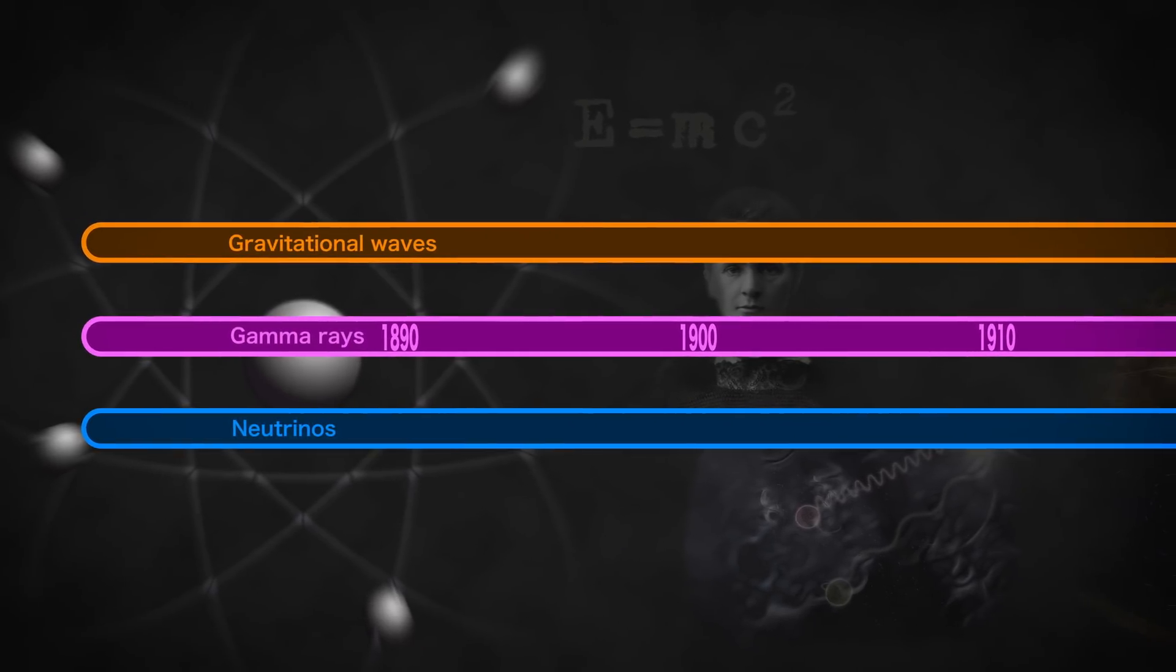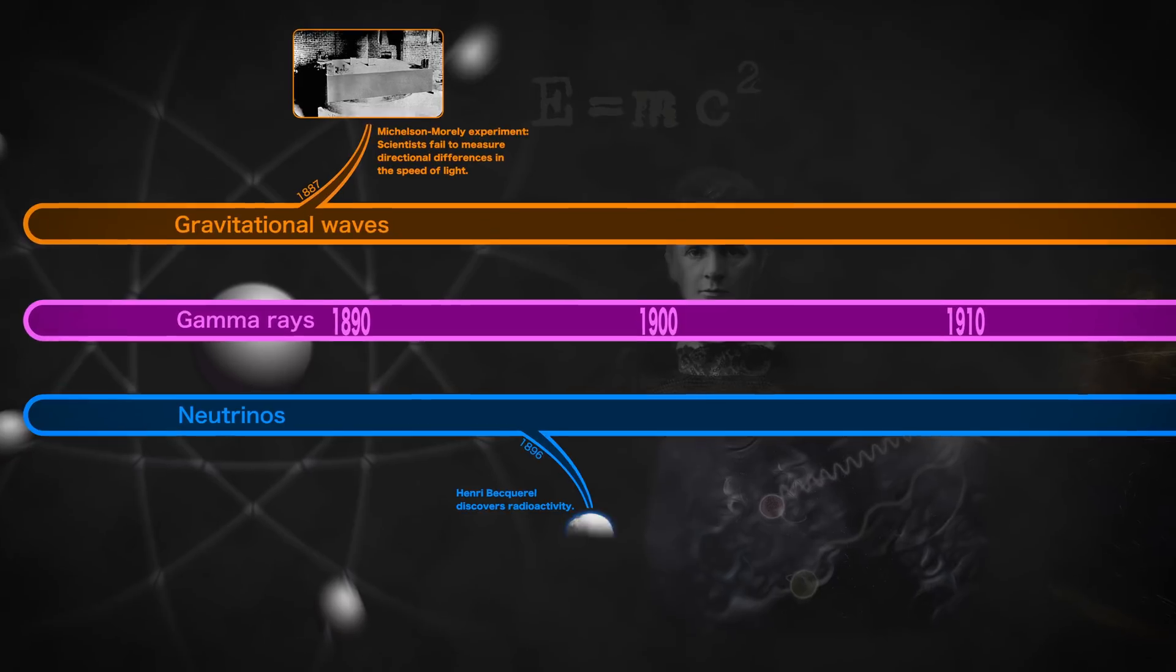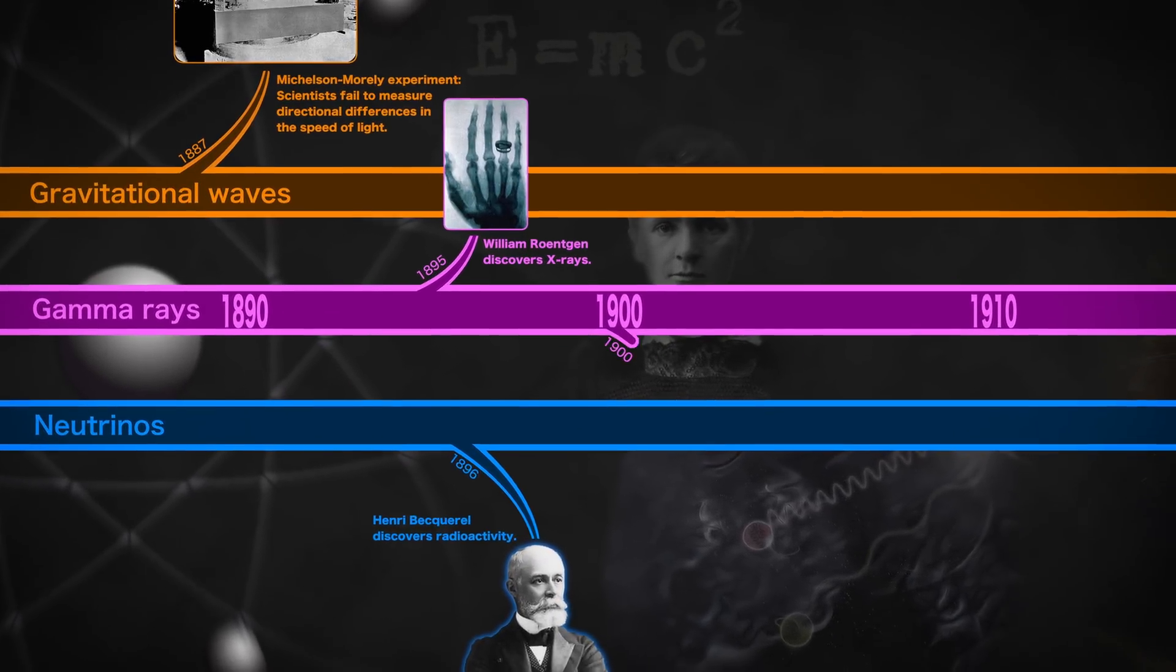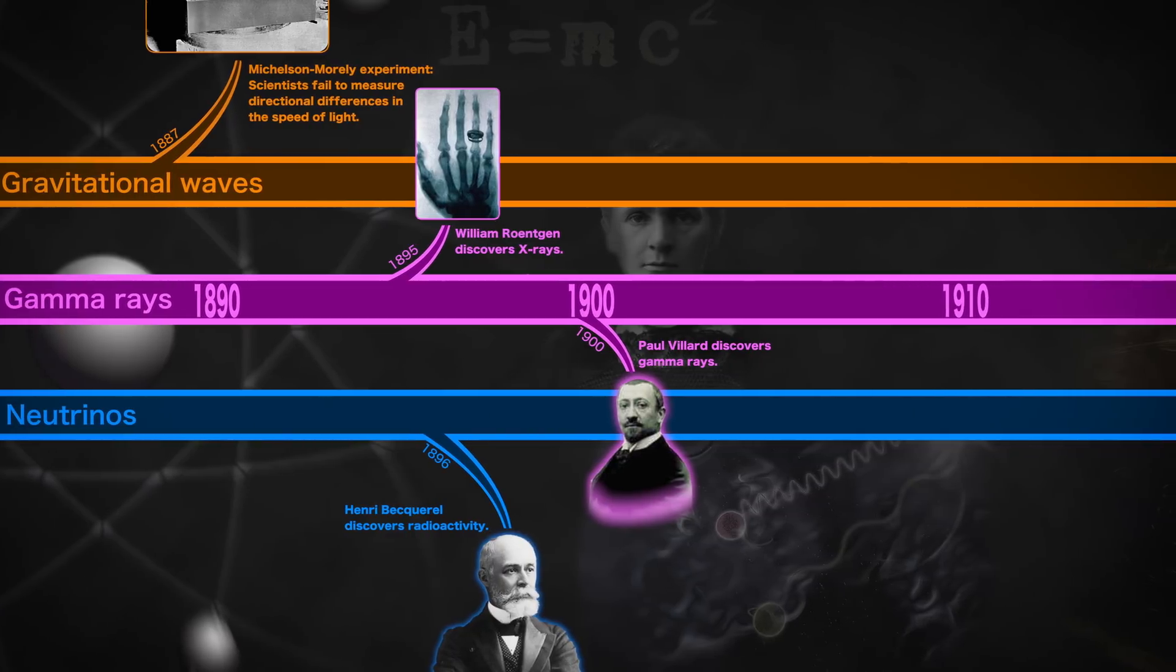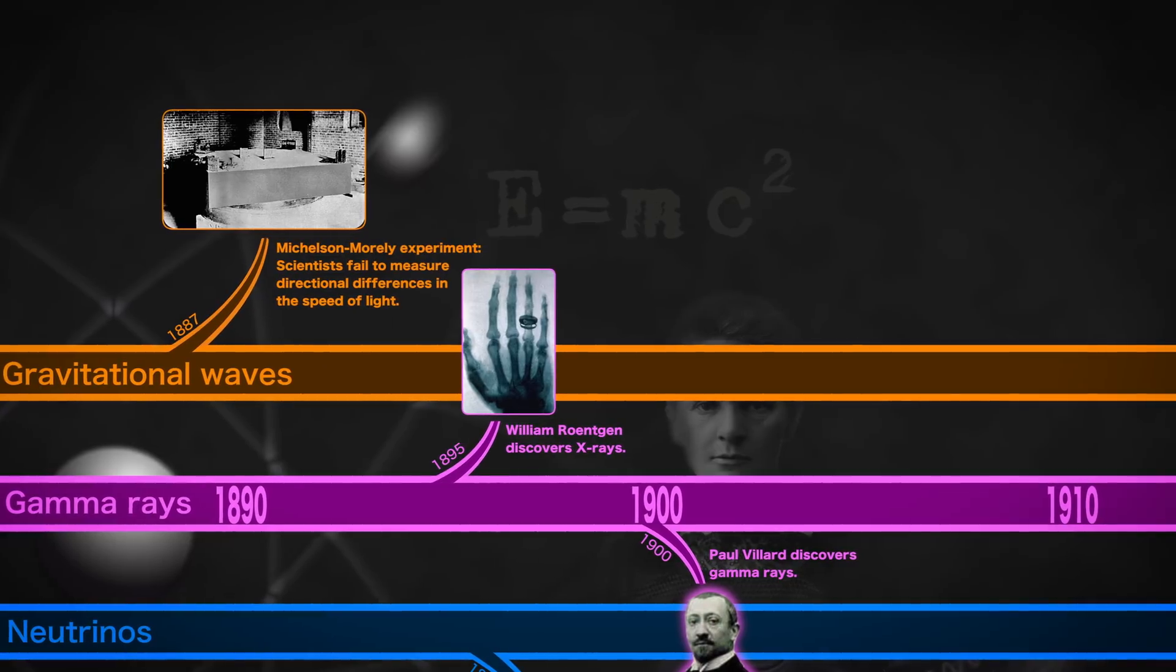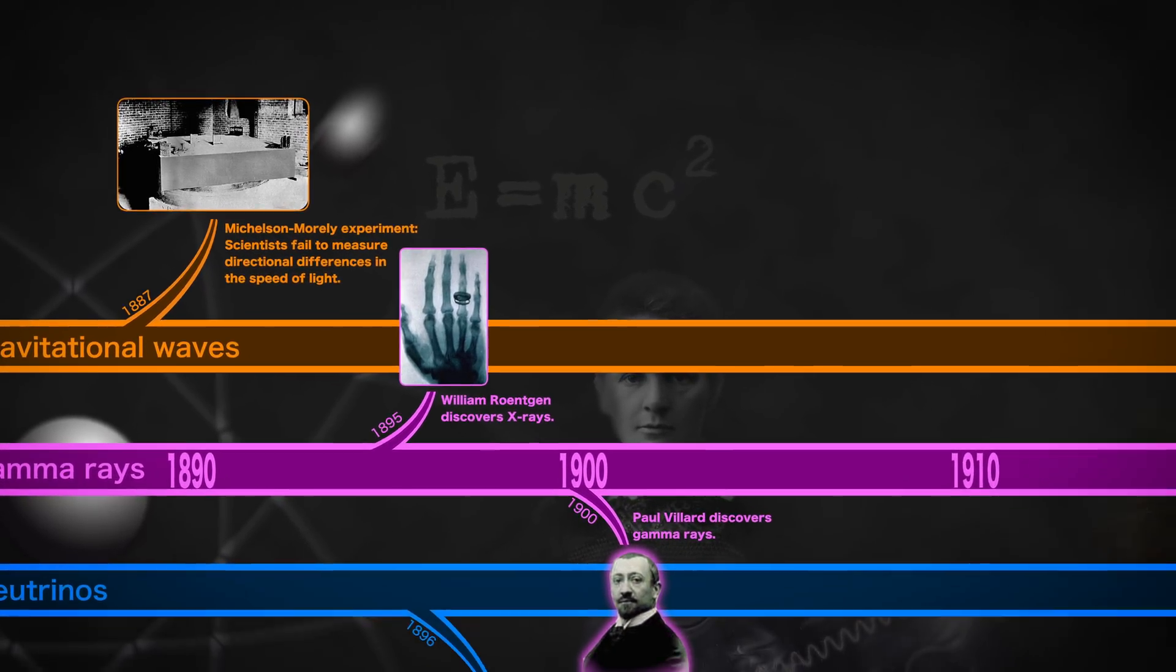As the 19th century closed, scientists worked to understand many new phenomena, including radioactivity and new forms of light: x-rays and gamma rays. Light was expected to need a medium called the ether in order to move through space, which meant its speed should change when measured in different directions on the moving Earth. Yet no changes were seen.